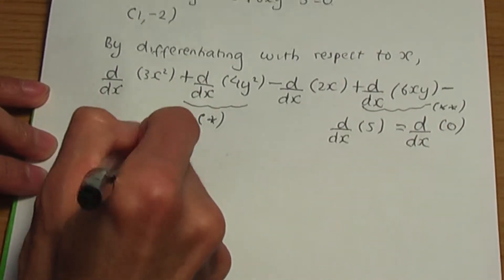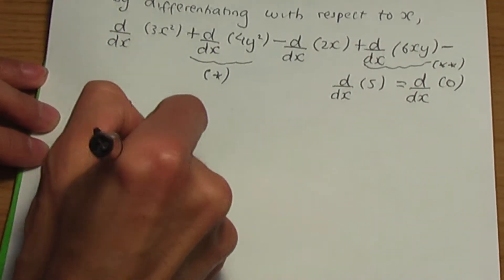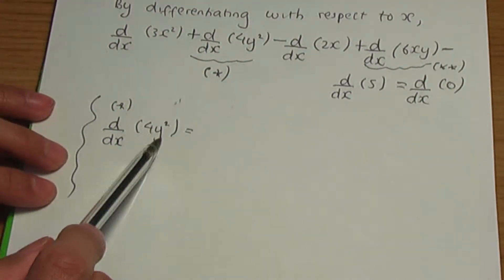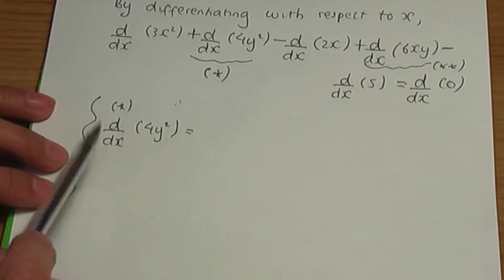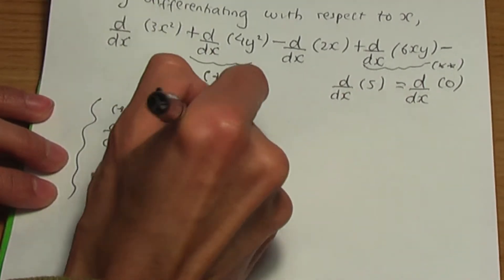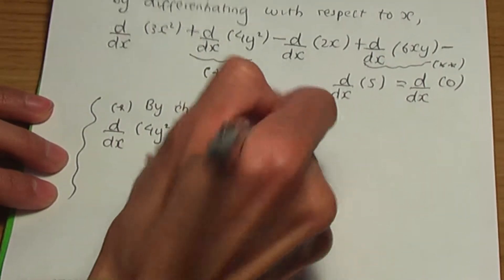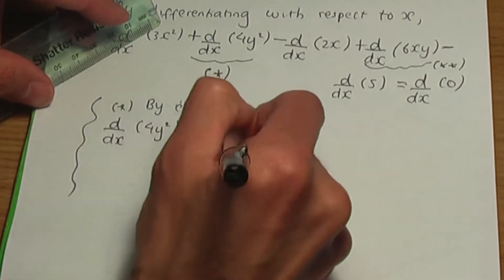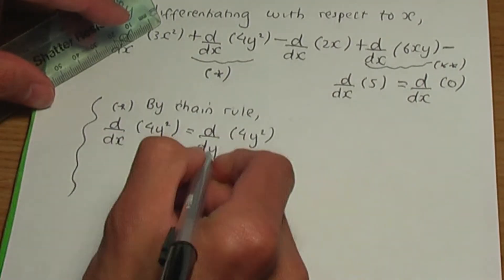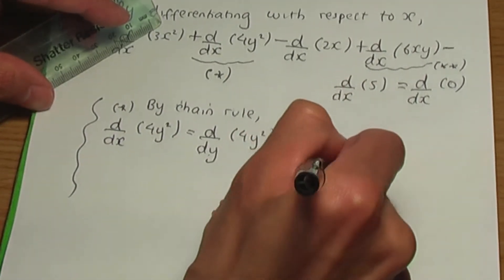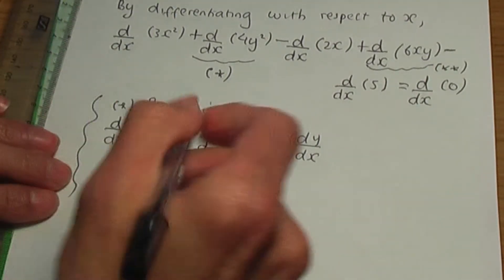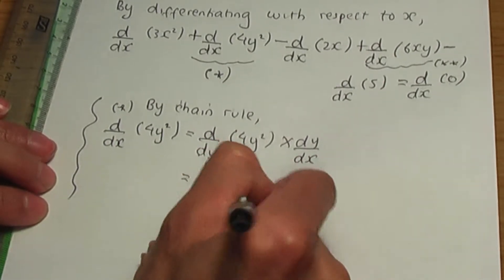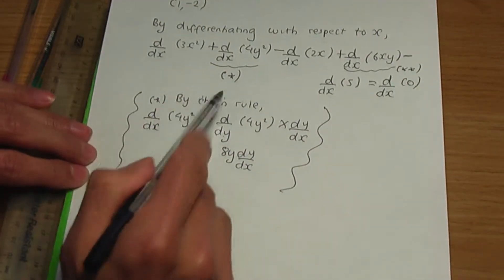Let's concentrate on star — how to differentiate 4y² with respect to x. If you want to differentiate a y-only term with respect to x, you need to apply the chain rule. By the chain rule, we first differentiate 4y² with respect to y to get 8y, then multiply by dy/dx. So the result is 8y dy/dx.